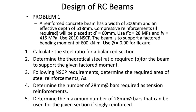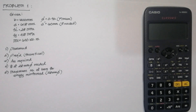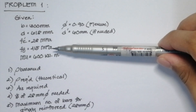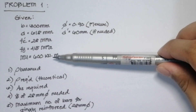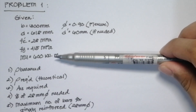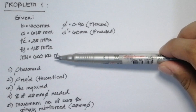Welcome back to another practice problem solving involving singly reinforced beam. We are done with the singly reinforced beam analysis and investigation, so now let us proceed in the design of singly reinforced beams. The ultimate moment given is 600 kNm, which will be our basis in our design.